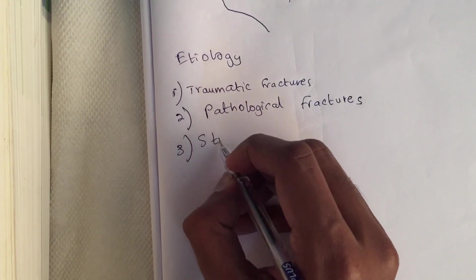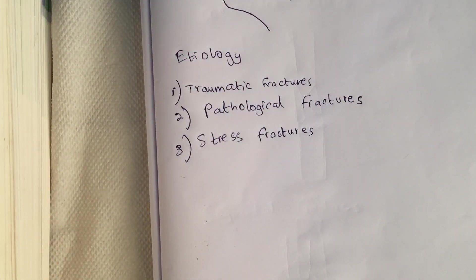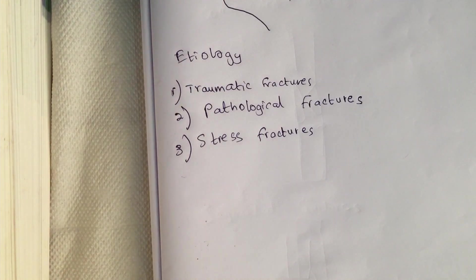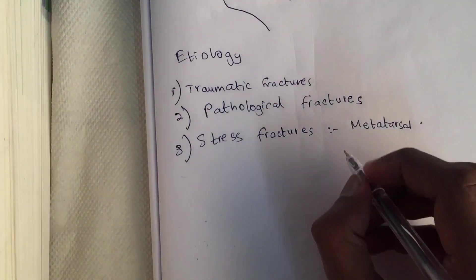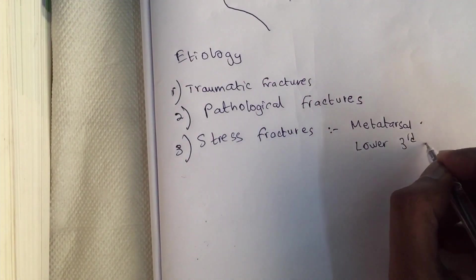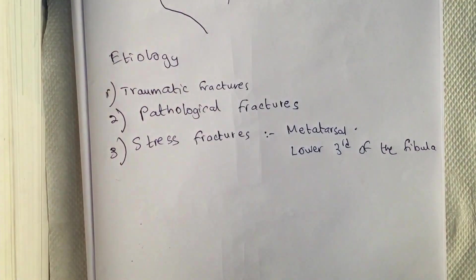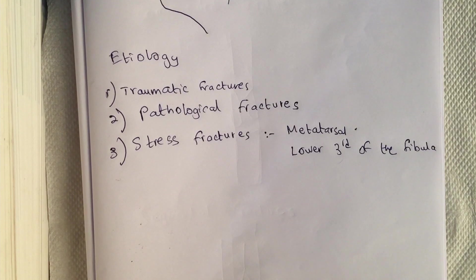The third type is stress fractures. These are special fractures that occur due to chronic repetitive injury and can cause complete or incomplete fractures in an otherwise normal bone. It may present with pain as the only symptom and may not be visible on X-rays. The common sites are the metatarsal and the lower third of the fibula. When the metatarsal gets fractured, it is known as March fracture — the fracture of the second metatarsal neck, seen in new recruits after long marches. It can also occur in the third metatarsal. When the fracture occurs in the lower third of the fibula, it is known as Runner's fracture.